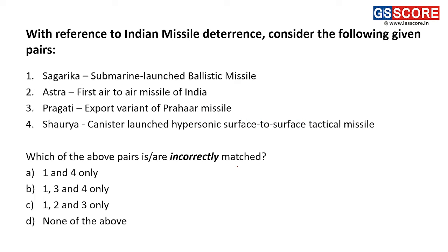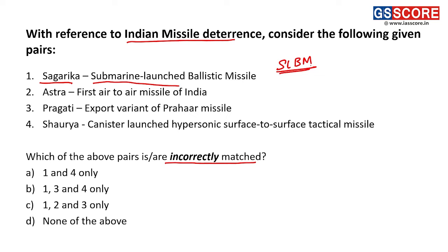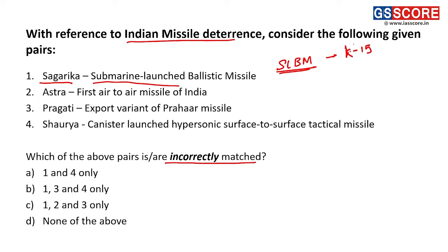First question: with reference to Indian missile deterrence, consider the following given pairs. We have four pairs, each missile with a description, and we are supposed to find out which pairs are incorrectly matched. First is Sagarika, matched with submarine-launched ballistic missile (SLBM). Sagarika is indeed an SLBM of the K missile family, also coded K15. So this pair is correctly matched.